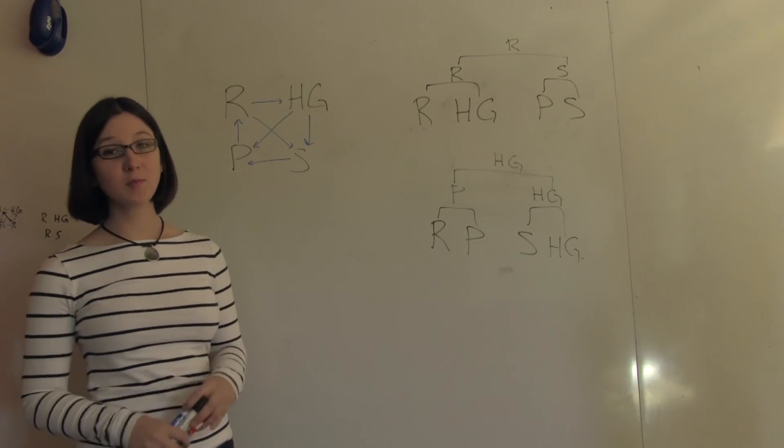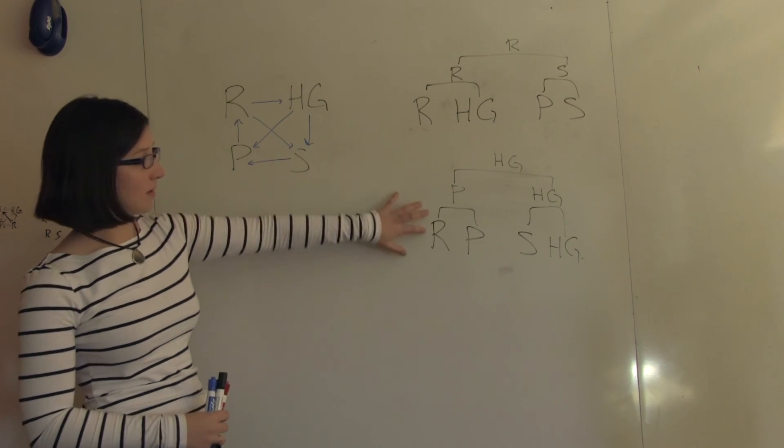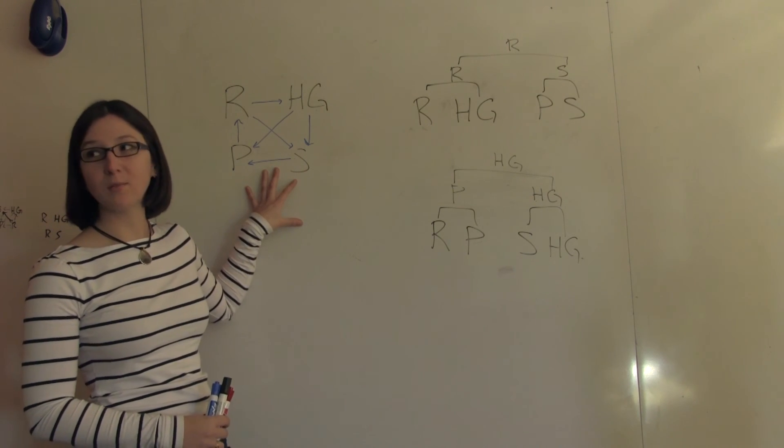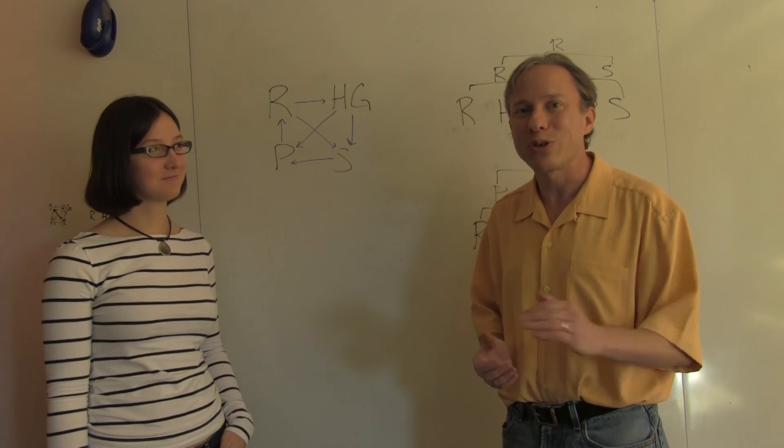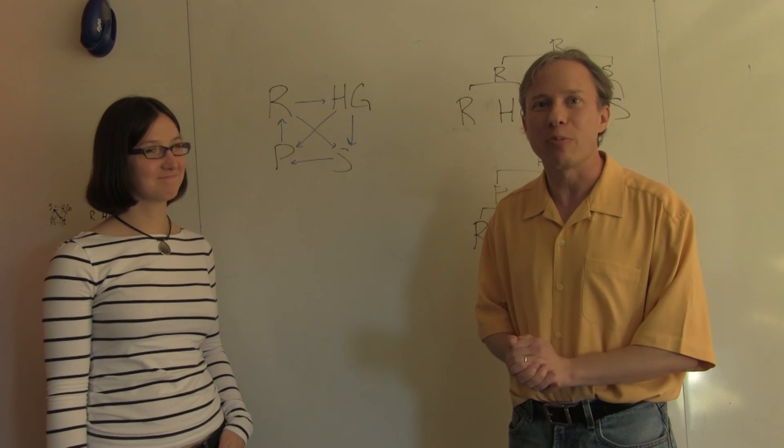So the tournament manipulation problem is to figure out if there's a bracket so that your favorite player wins, given information about the match outcomes. I'm not sure if this explains how the US lost the Women's World Cup, but we'll leave that as an open problem.